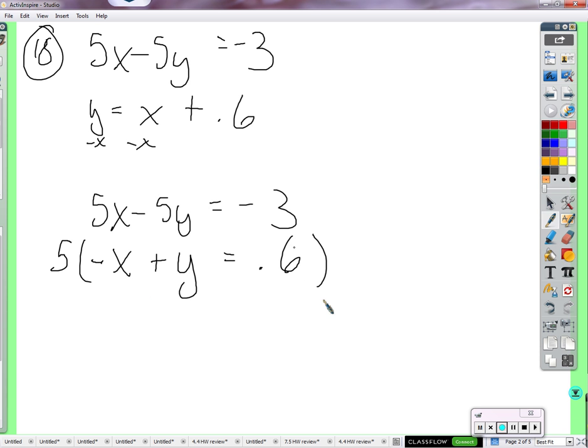So we'll multiply the left side by 5, right side by 5. Here's the top equation, 5x minus 5y equals negative 3. 5 times negative x is negative 5x. 5 times y is positive 5y. 5 times 0.6 is 3.